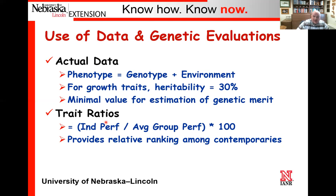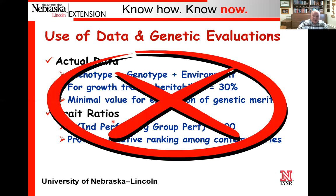In terms of trait ratios, all that's doing is basically ranking everyone from top to bottom using a scale of 100 as average. It provides a relative ranking. Overall, actual data and trait ratios are important for showing herd performance, but for making genetic decisions they're really not a lot of value—it's basically one point in time for one animal only. Hence, if we're truly wanting to make genetic selection, I would advise against using strictly actual performance or ratios.